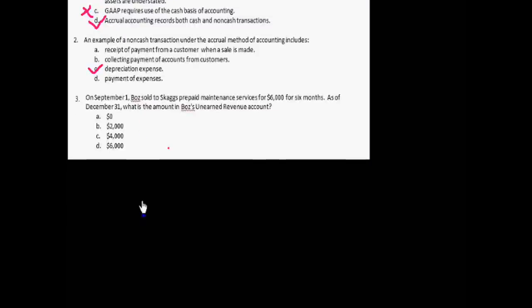Third, on September 1st, Bose sold to Seggers prepaid maintenance service for $6,000 for six months. As of December 31st, what is the amount of Bose's unearned revenue account? Because September to December is four months.